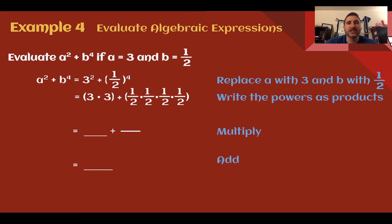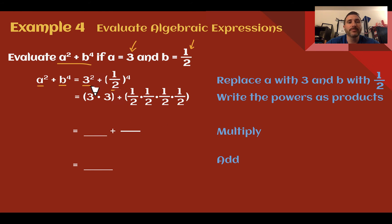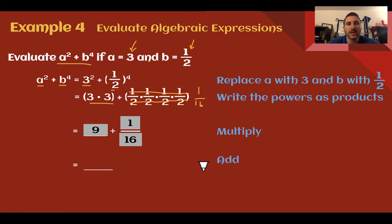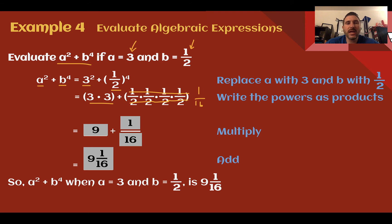Example 4: Evaluate algebraic expressions. Evaluate a squared plus b to the 4th if a equals 3 and b equals 1 half. We're given numbers to plug in for each variable: every time I see an a, substitute in 3; every time I see a b, substitute in 1 half. So I have 3 to the 2nd power, which is 3 times 3, plus 1 half to the 4th power, which is 1 half multiplied 4 times. 3 times 3 is 9. For 1 half to the 4th: multiply the tops to get 1, multiply the bottoms — 2 times 2 times 2 times 2 — to get 16, giving 1 sixteenth. Combining those together, we get 9 and 1 sixteenth.